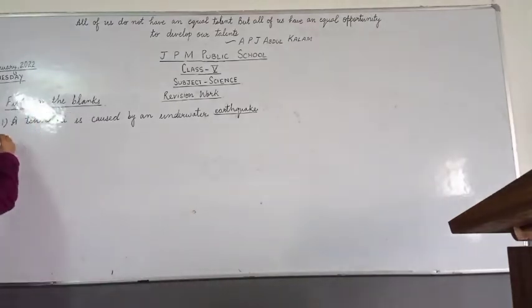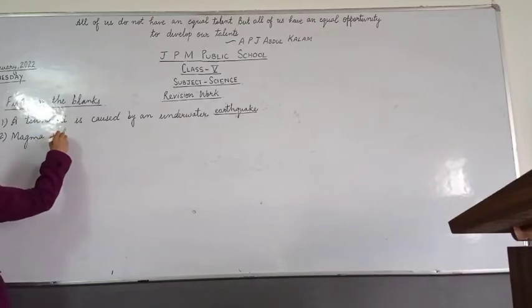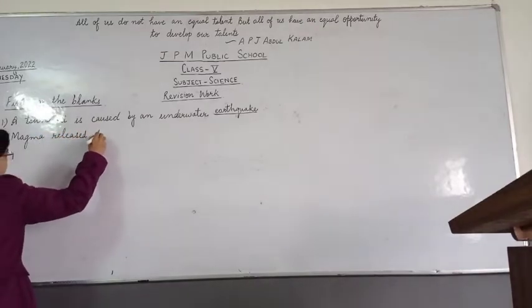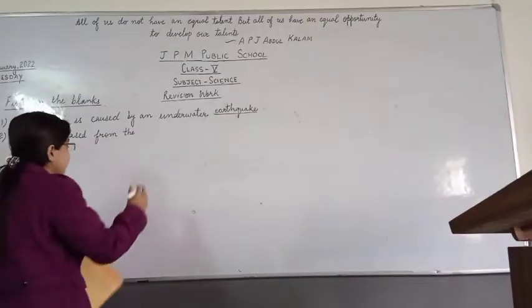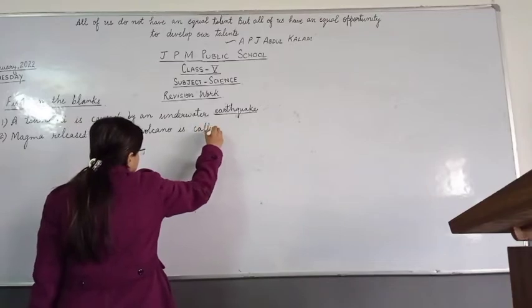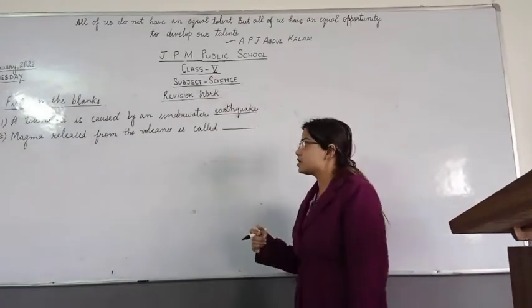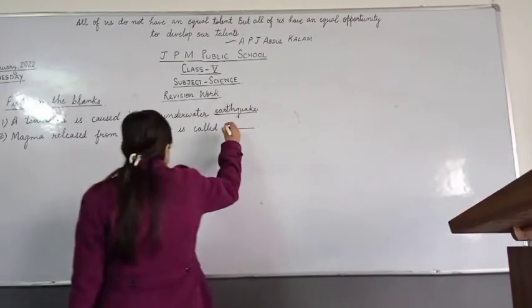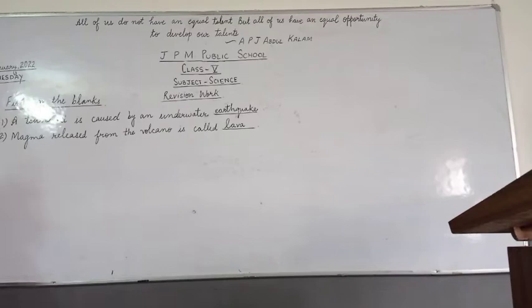Number two: Magma released from the volcano is called dash. When the magma is released out from the volcano, what is it called? It is called lava. So the second answer is lava. Write it down, everyone. Magma released from the volcano is called lava.